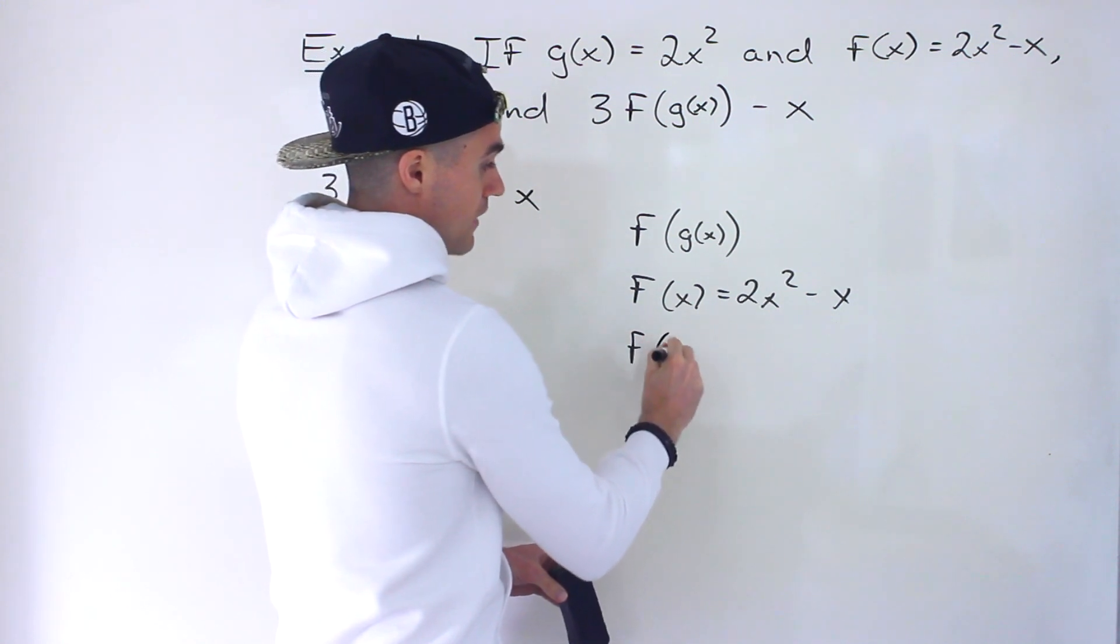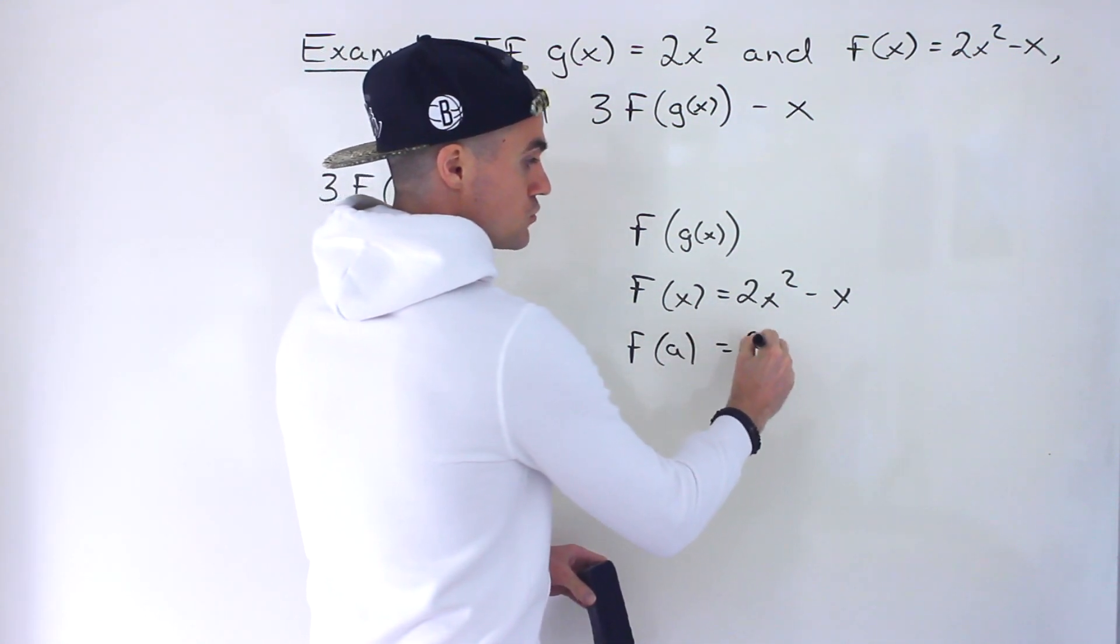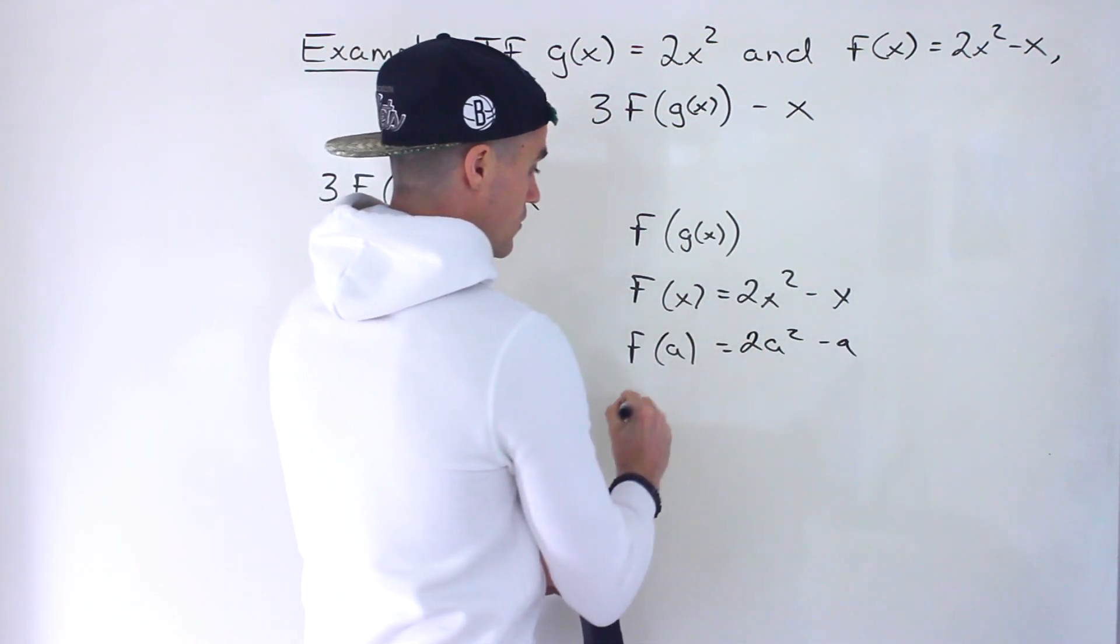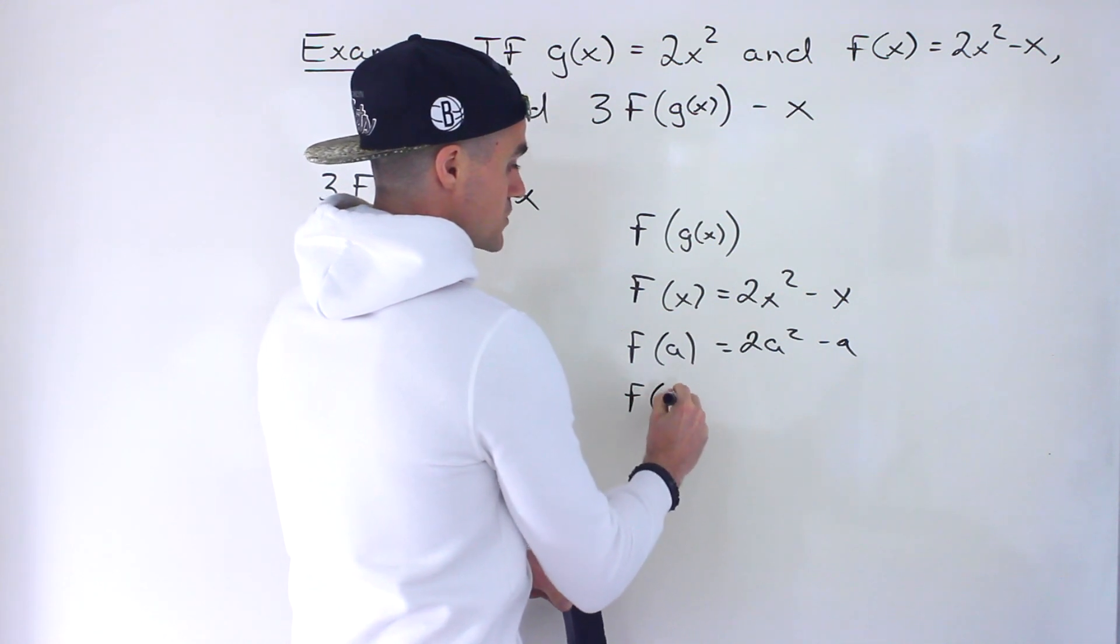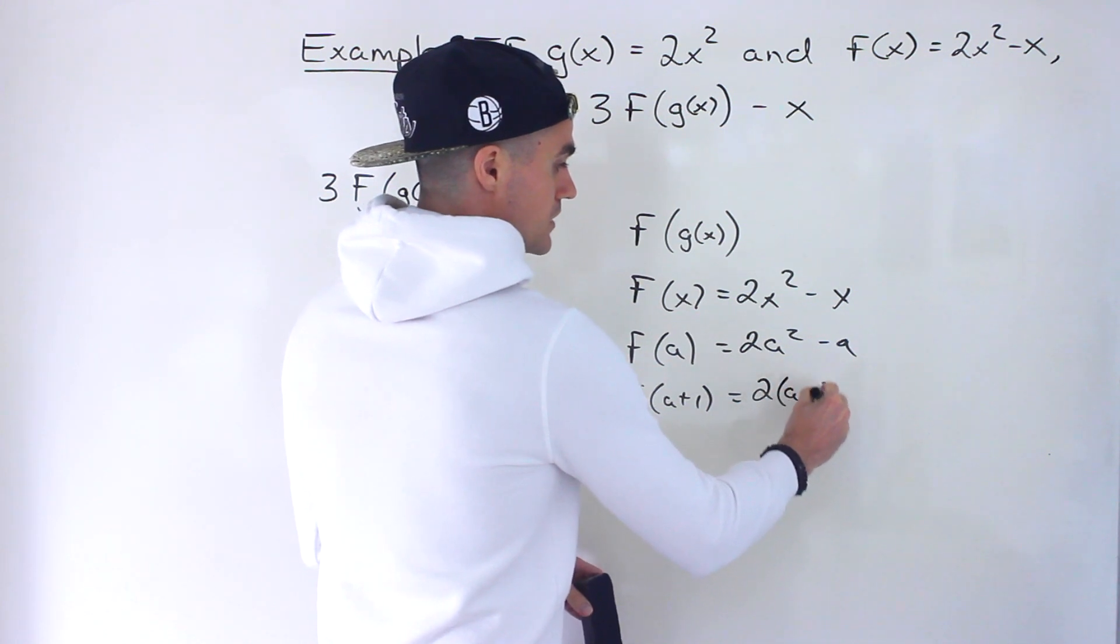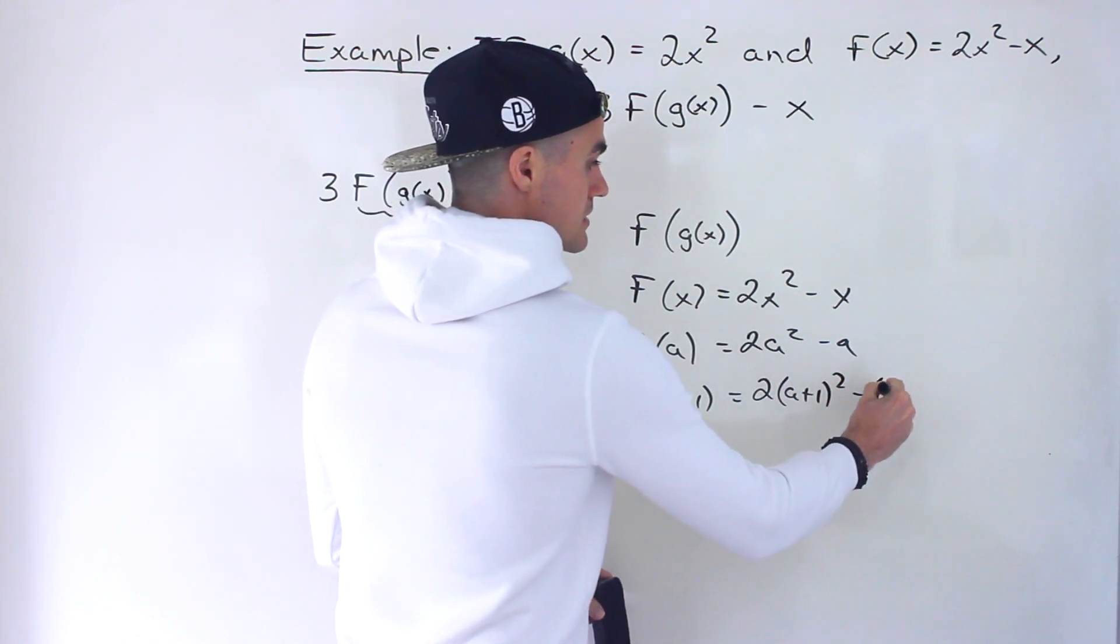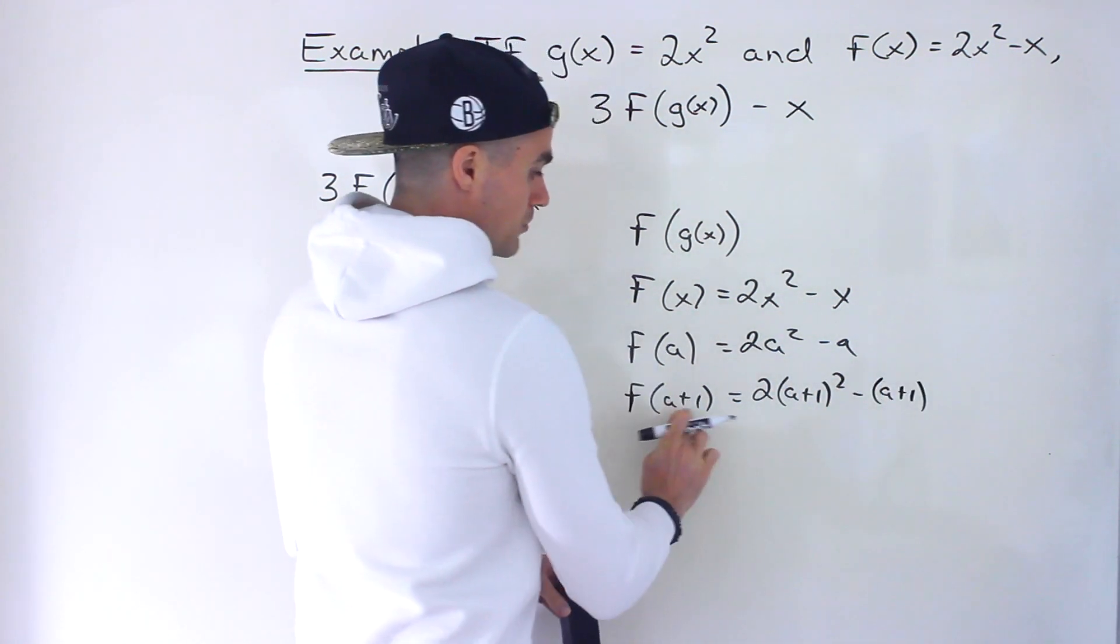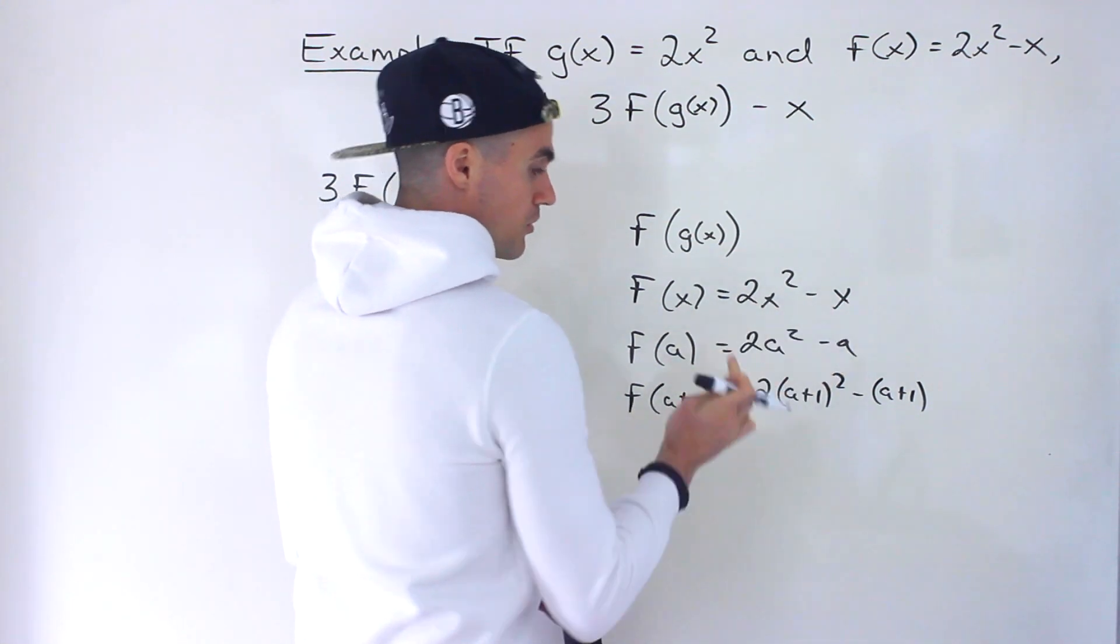So for example, if we have f of a, that's going to be 2a squared minus a. Or if we have f of a plus 1, that's going to be 2(a+1)² minus (a+1). We'd plug in that a plus 1 for both x's.